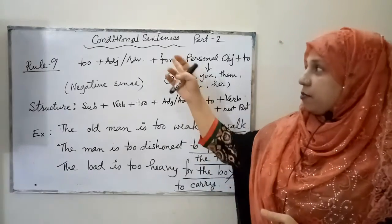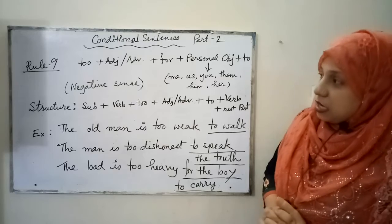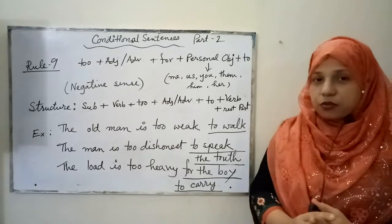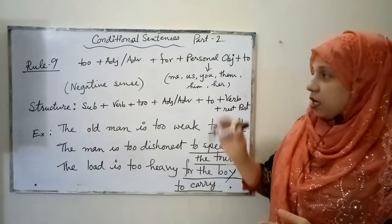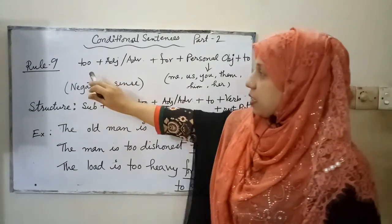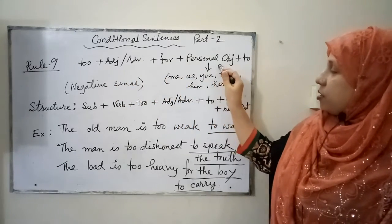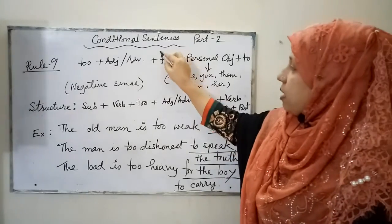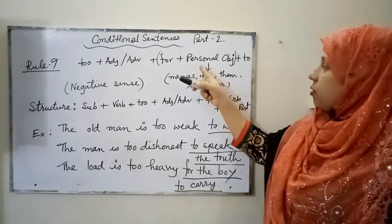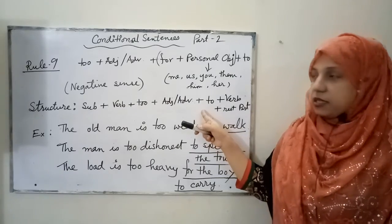Today's class is on completing sentences, Part 2. In the last class we completed up to rule number 8, and today I'm going to start with rule number 9. If 'too' is given in the incomplete sentence — like 'too + adjective or adverb + for + personal object' — it may or may not be in the structure, followed by 'to'. We will follow this rule to complete the sentence.